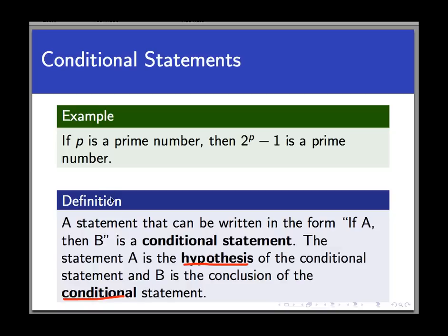So this is one example of a conditional statement, and the hypothesis is p is a prime number. This is the condition under which something is supposedly guaranteed to happen. And the conclusion, which is the thing that happens, is 2 to the p minus 1 is a prime number.